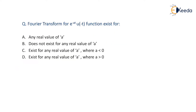Next problem: for what values of a does the Fourier transform of e^(-at)·u(-t) exist? The options are: (a) for any real value of a; (b) does not exist for any real a; (c) exists for real a where a < 0; (d) exists for real a where a > 0. Let us analyze the function e^(-at)·u(-t).